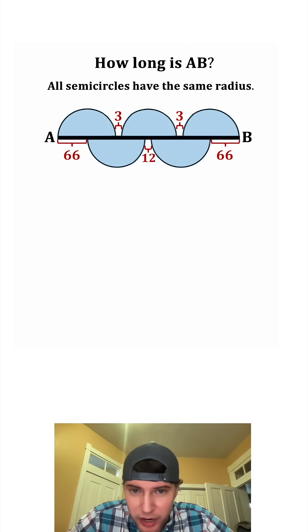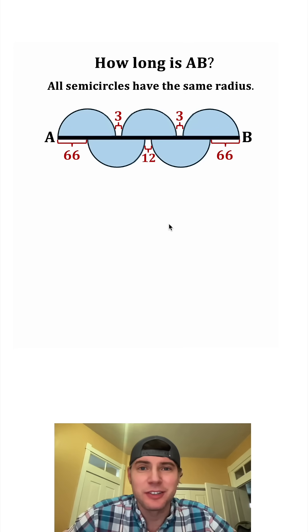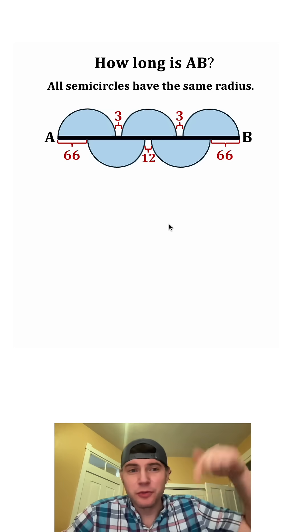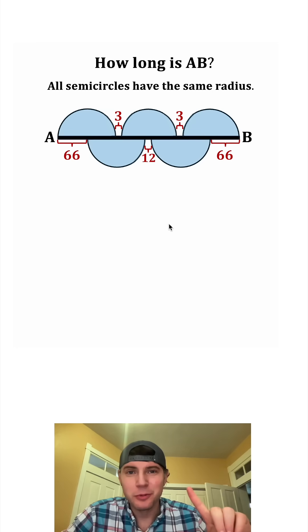And it's giving us that all semicircles have the same radius. And it's kind of hard to see, but these are red arrows pointed to the spaces between the semicircles. If you want to try it on your own, pause it right now, because I'm going to solve it in three, two, one.